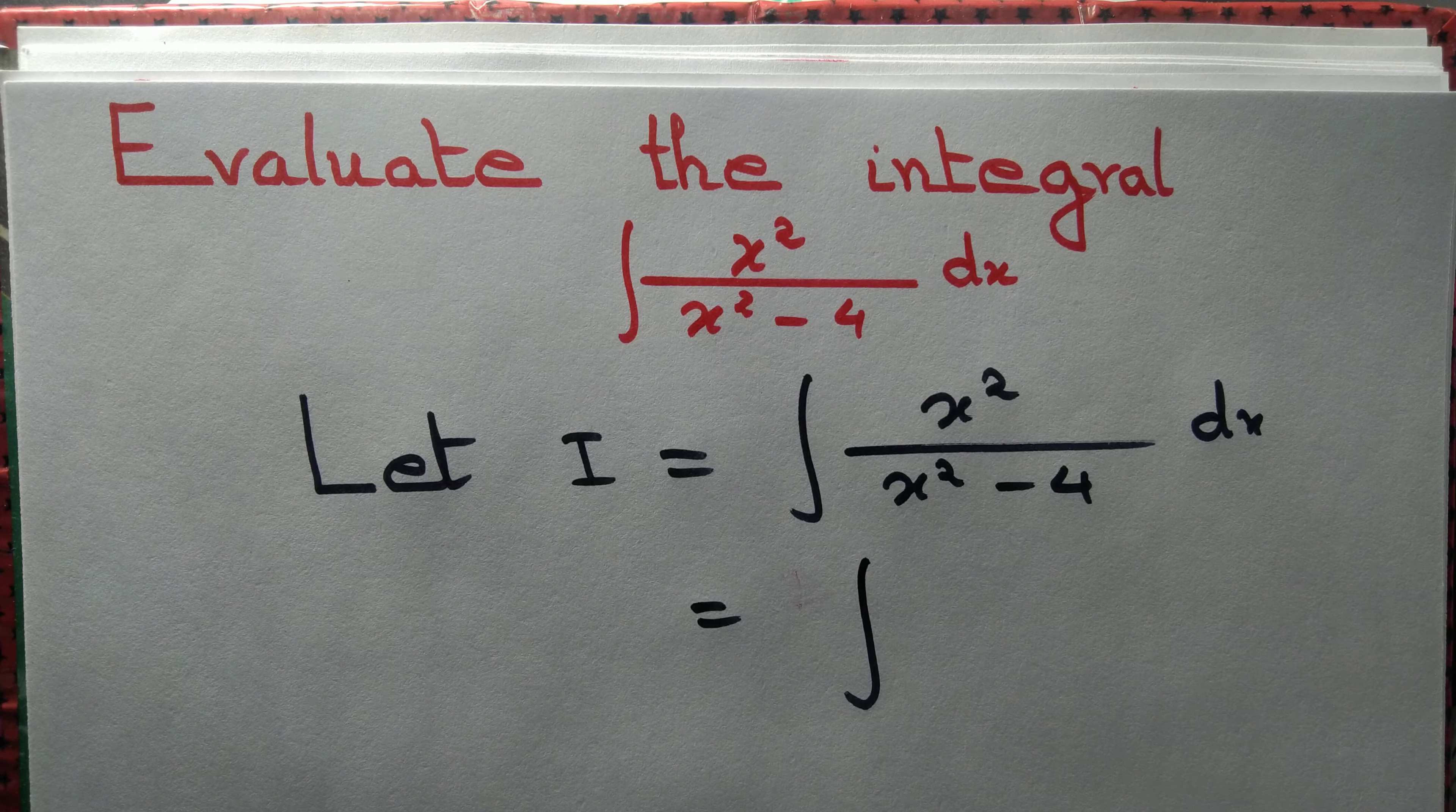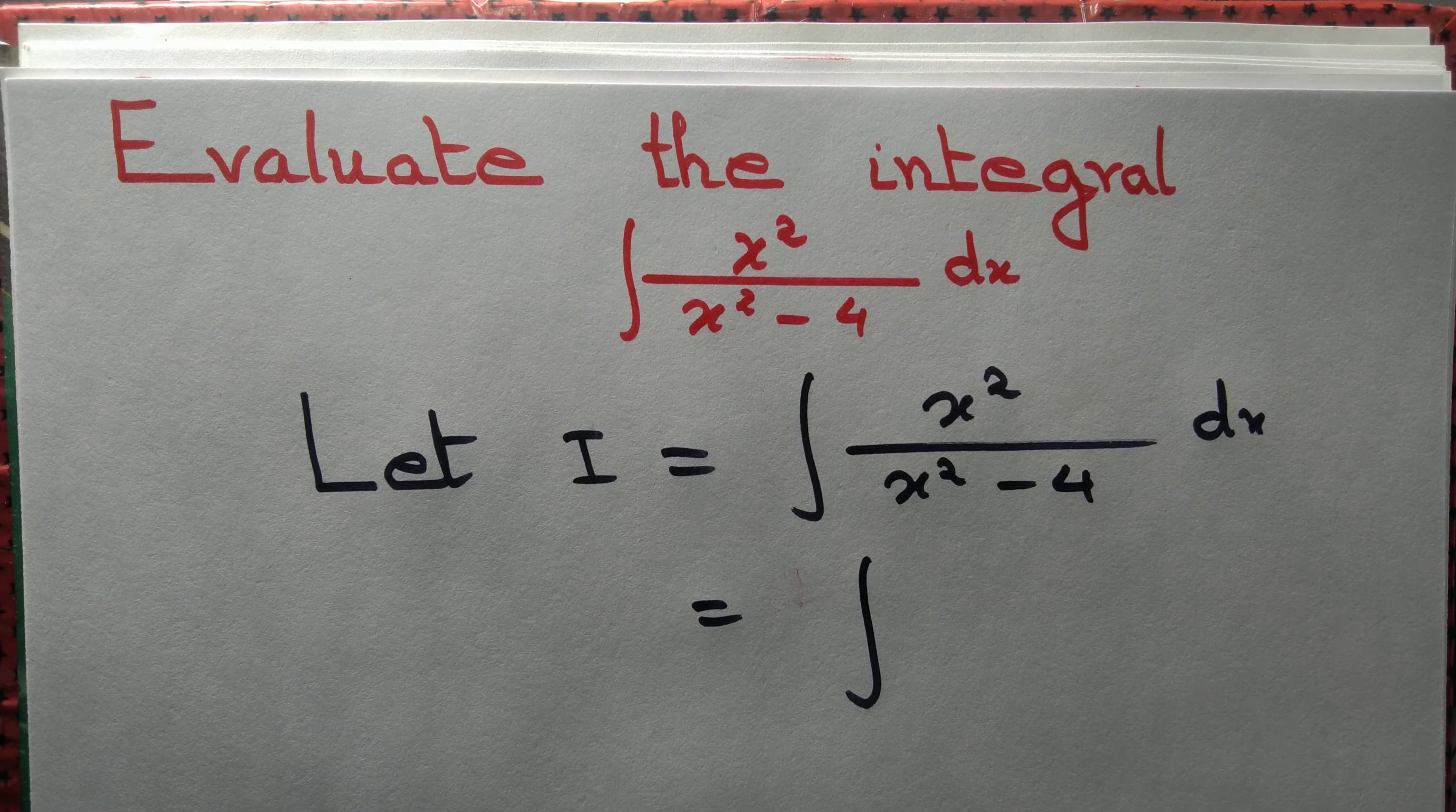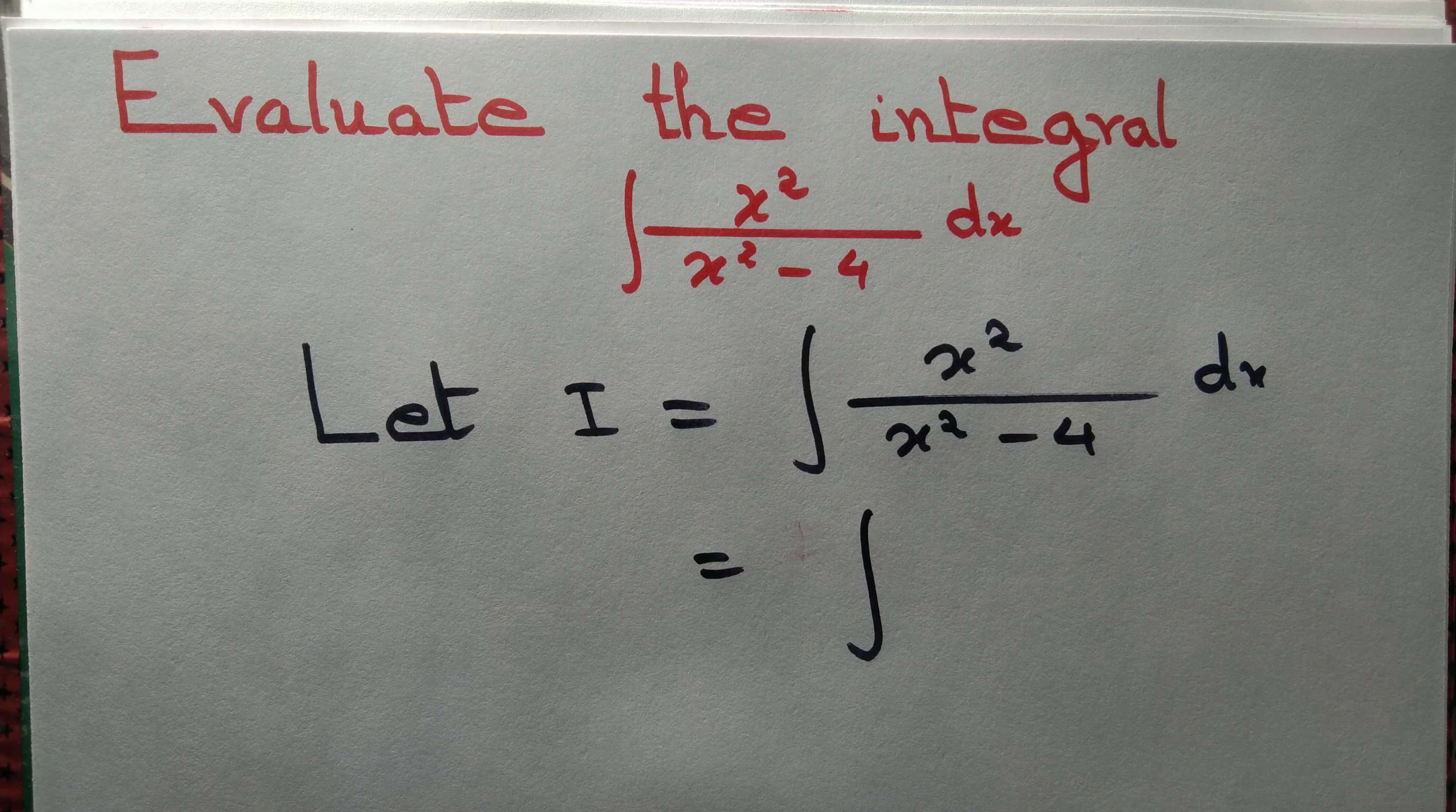Let's evaluate the integral x square by x square minus 4 dx. First step we write let I equal to integral x square by x square minus 4 dx.